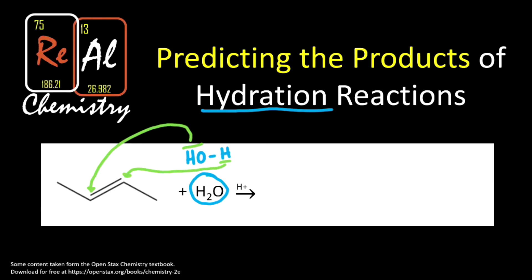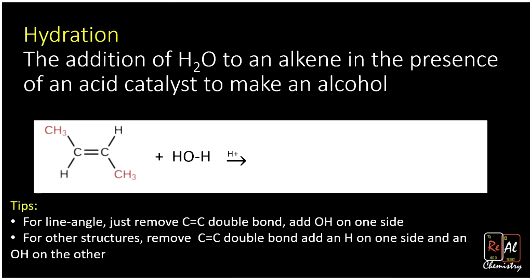What that means is we draw our same line angle structure and on one side we're going to get an OH and on the other we'll have that hydrogen tack on. With line angle structures we don't actually need to explicitly draw the hydrogen, so it looks like just an OH adding to one side of that double bond. There are some trickier rules with hydration reactions — which side do we add the OH to? A hydration reaction is the addition of H2O to an alkene in the presence of an acid catalyst to make an alcohol.